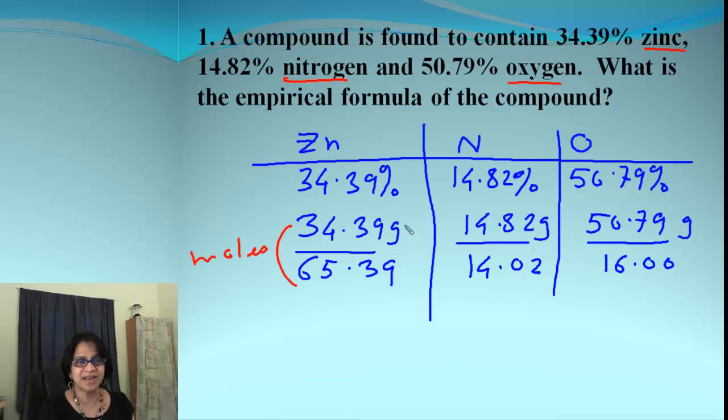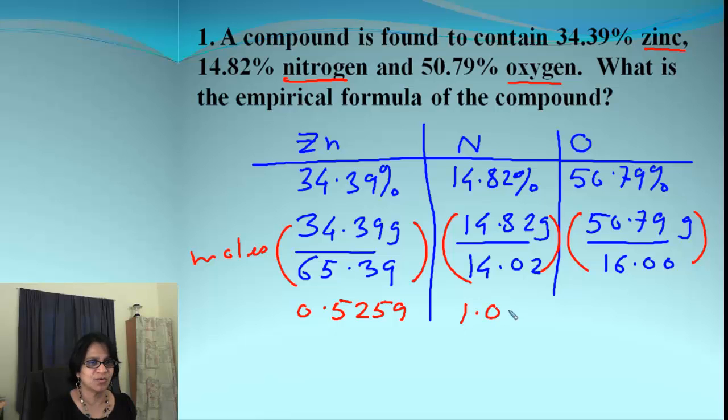After that, let's simplify how many moles we are getting for each of that. So we got 0.5259. I got 1.0578 and 3.174. We are still in moles. So where do we go after that?